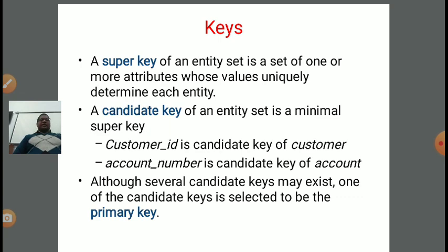Next is candidate key. A minimal super key is called a candidate key. If we remove the extraneous attributes from a super key, it becomes a candidate key. The candidate key of an entity set is a minimal super key — for example, customer ID is a candidate key of the customer relation and account number is a candidate key of the account relation. Although several candidate keys may exist, one of them is selected to be the primary key — the minimal candidate key is picked as the primary key.